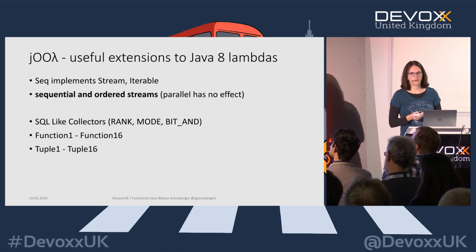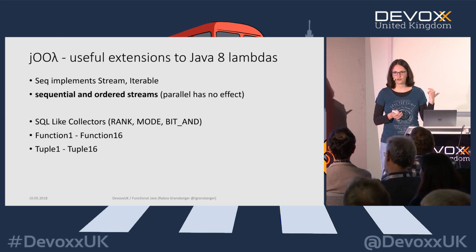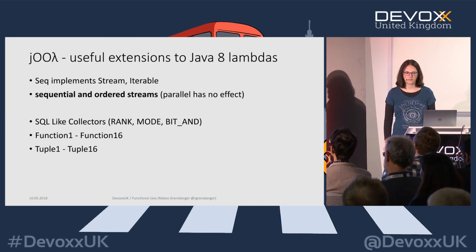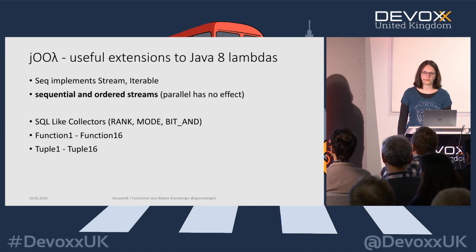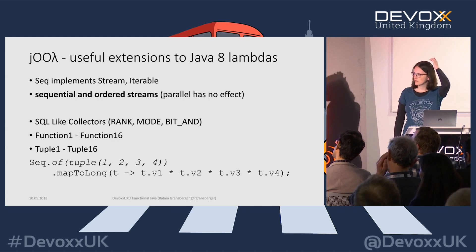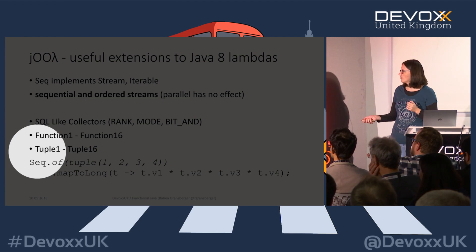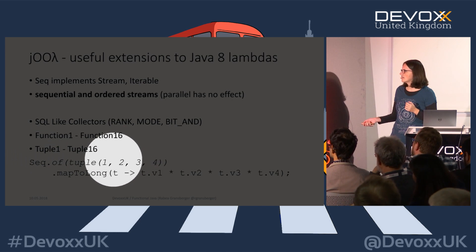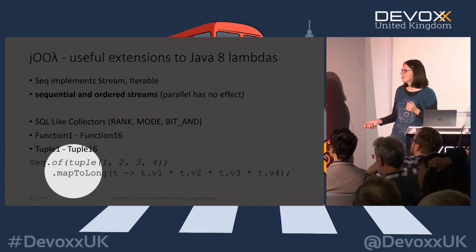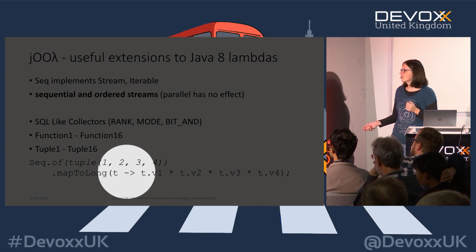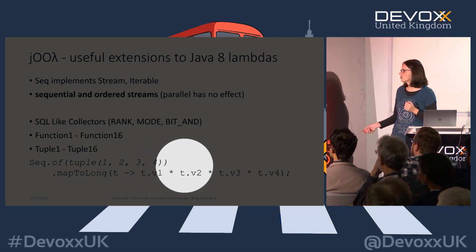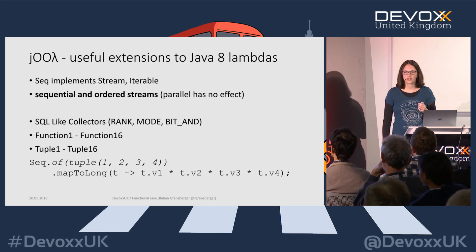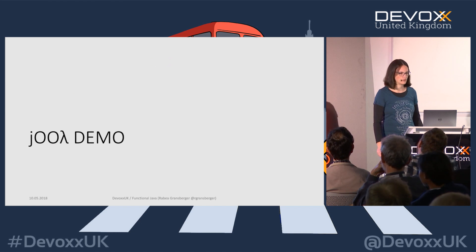In Java we only have `Function` with one parameter and `BiFunction` with two parameters. In jOOL we can go up to 16 parameters, and we also have tuples for that. You can create a sequence, create a `Tuple4` with values 1, 2, 3, 4, and because it supports functions for this style you can call `mapToLong` — take all four tuple values, multiply them together and get a single result. You could only do that in Java if you create your own data structures, but here they are provided as tuple values.